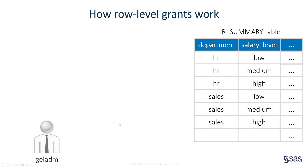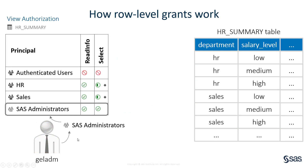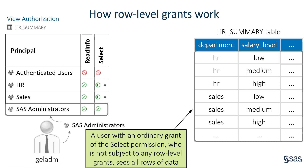Finally, when we access the same table and report as GelADM, who's a member of the SAS Administrators group, the SAS Administrators group just has a plain select. There are no row-level filters on the data that the SAS Administrators group can see. So SAS Administrators see all of the rows of data in the table — not just for HR and sales, but for all of the other departments as well.